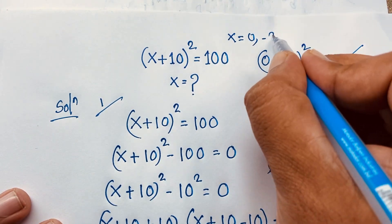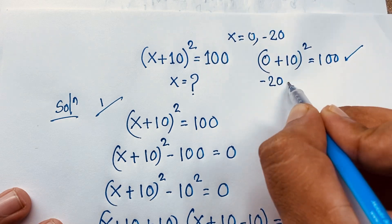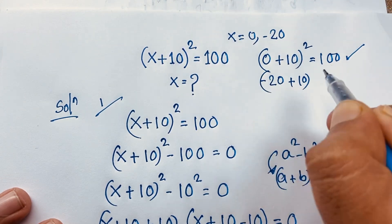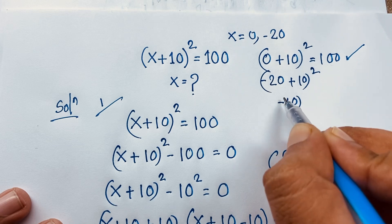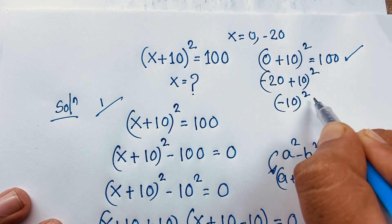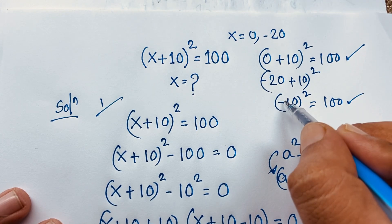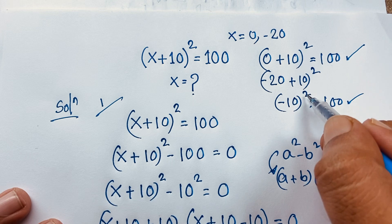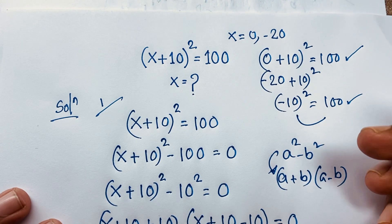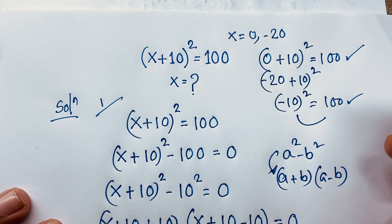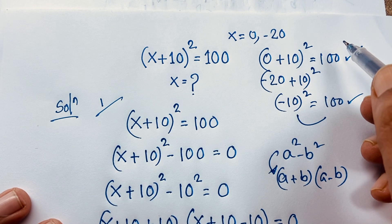Now for x = −20: (−20 + 10)² = (−10)² = 100. It is also 100, because a negative number raised to an even power is always positive. So left-hand side and right-hand side are both equal. Our final answer is x = 0 or x = −20.